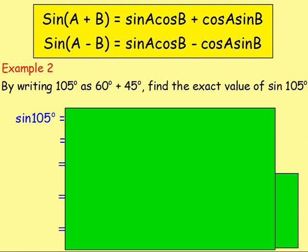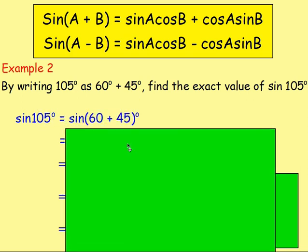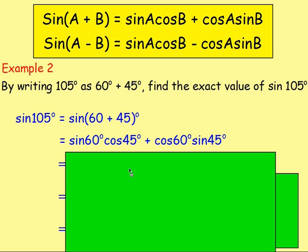Example two: by writing 105 degrees as 60 degrees plus 45 degrees, find the exact value of sine 105. So you want to write it as sine of 60 plus 45. Then you expand it using your addition formulae — sine something plus something becomes sine A cos B plus cos A sine B. Replacing A with 60 and B with 45 will give us that expanded form.